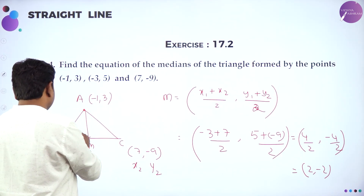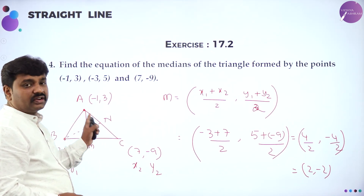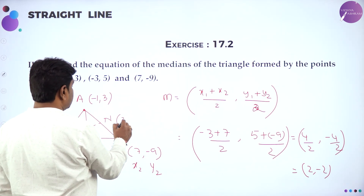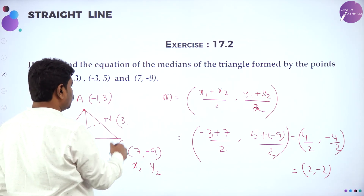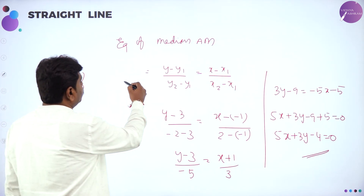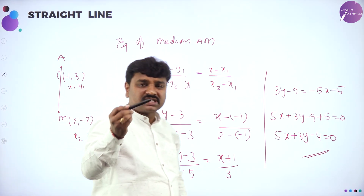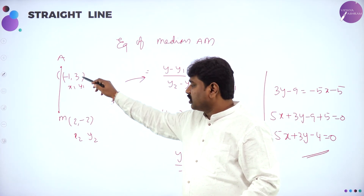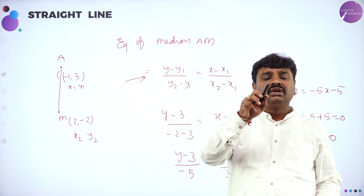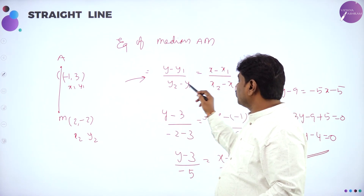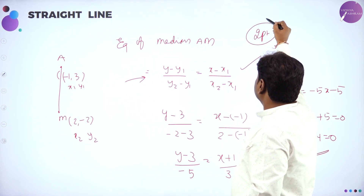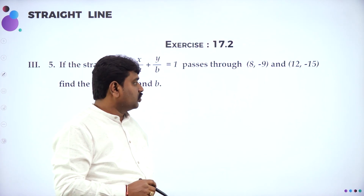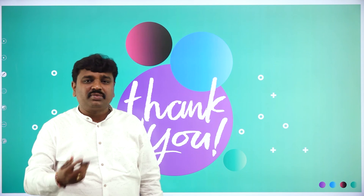We got the equation of median AM as 5X plus 3Y minus 4 equals 0. Similarly, find median BN: first find midpoint N of AC. Midpoint N of AC: X-coordinate is (7 minus 1) divided by 2 equals 3, Y-coordinate is (minus 9 plus 3) divided by 2 equals minus 3. Then use the two-point form with B and N to find the equation of BN. Similarly, find all three medians by this method. I conclude the session — please sit and practice all the problems. Thank you for attending.